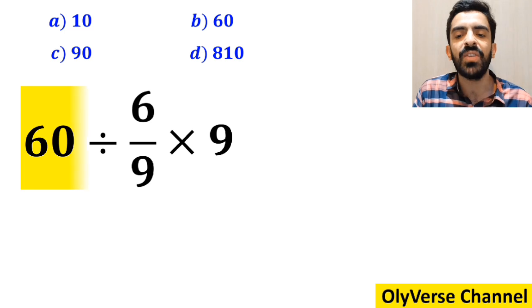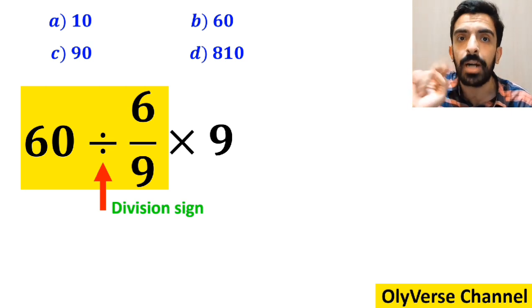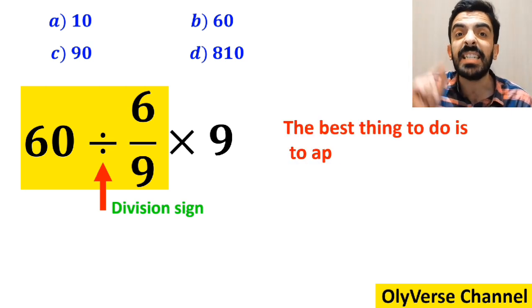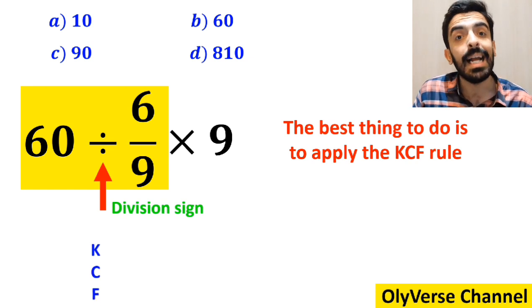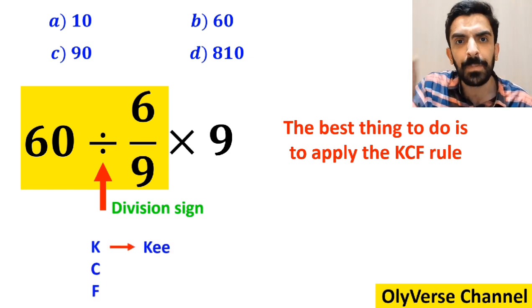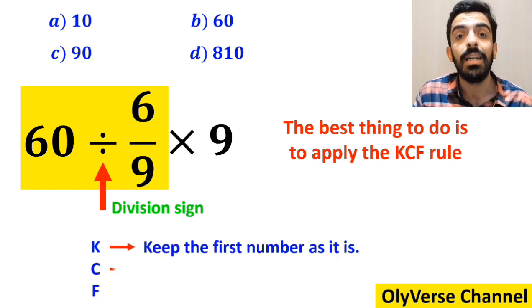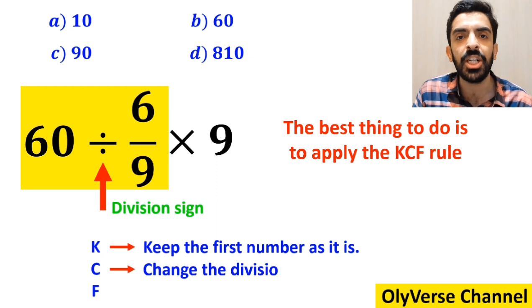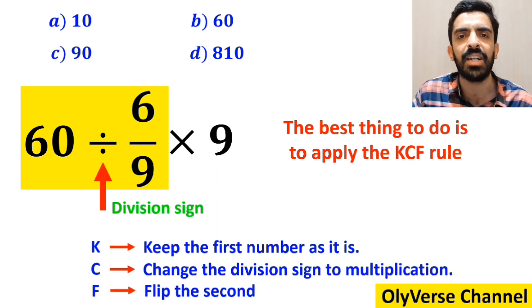So, first we start with the expression 60 divided by 6 over 9. Whenever we come across a division sign between two terms, the best thing to do is to apply the KCF rule. K stands for keep the first number as it is. C stands for change the division sign to multiplication. And F stands for flip the second fraction.